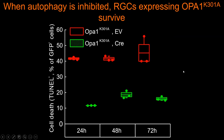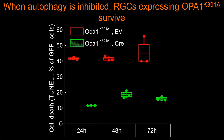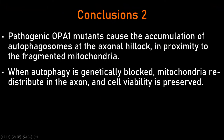This is good for the retinal ganglion cells, because when you express pathogenic OPA1 mutants in these cells, they are not happy and tend to die after a few days of culture. But if you simultaneously delete one allele of the essential autophagy gene ATG7, they now survive. So at this point, we know that pathogenic OPA1 mutants cause autophagosome accumulation at the axon hillock in proximity to mitochondria, and that if we genetically inhibit autophagy, mitochondria can redistribute into the axon and viability is preserved.